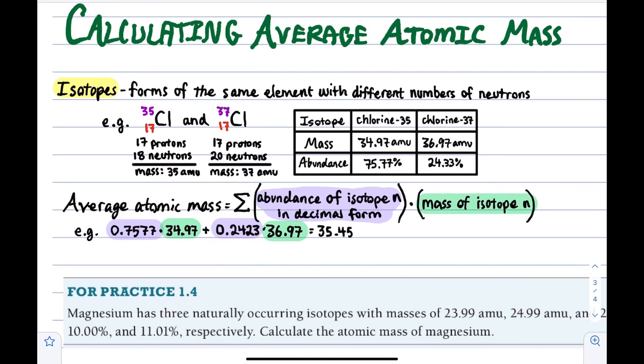In this video, I want to focus on isotopes. Isotopes are versions of the same element that have different numbers of neutrons.